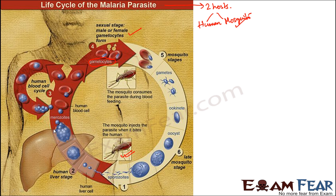Once the sporozoids enter the human body, they directly reach the human liver — so first of all the liver is affected. These sporozoids then undergo asexual reproduction and multiply in number. When the number becomes too large, the liver cells start to burst.